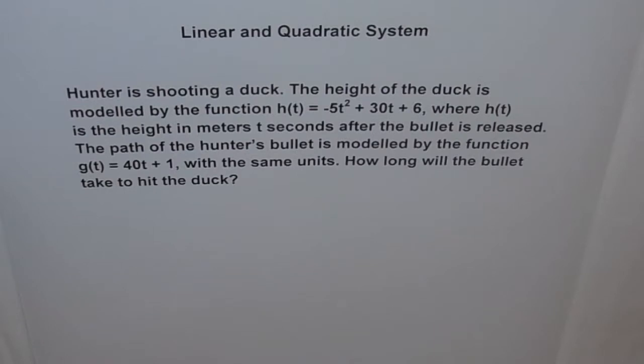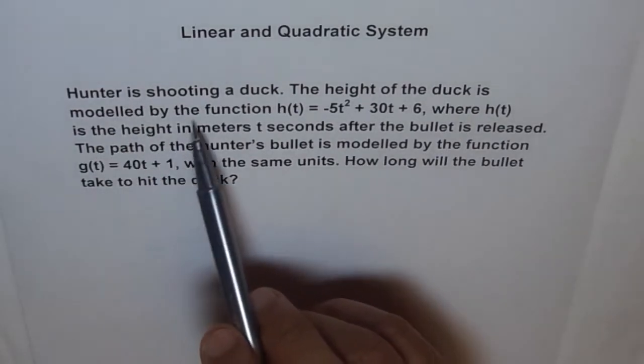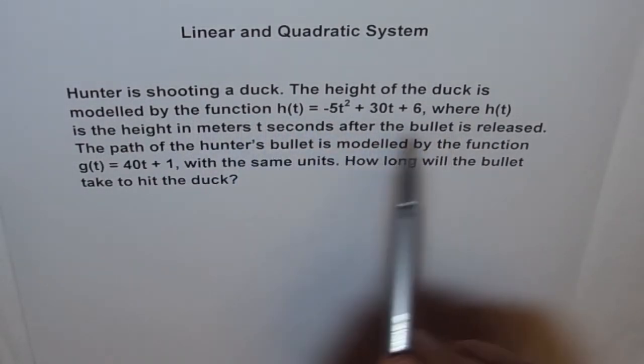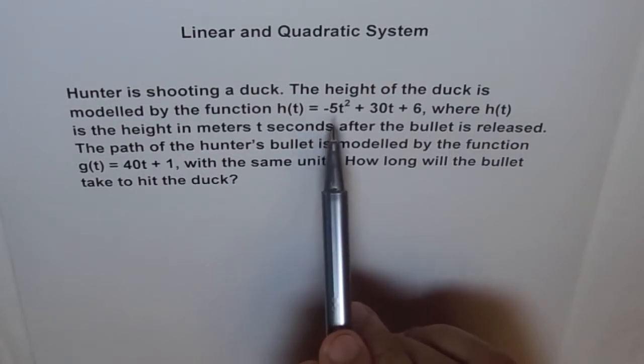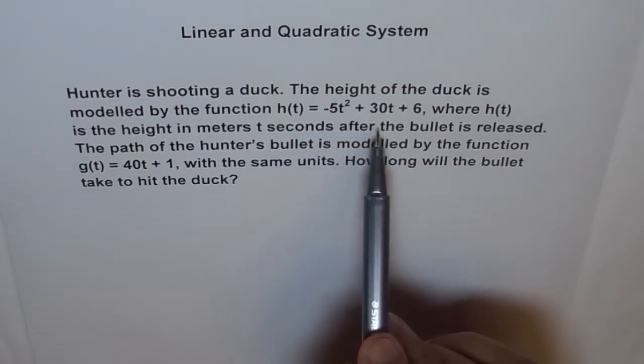Okay, now let's go through the problem and then see how to solve such a system. Hunter is shooting a duck. The height of the duck is modeled by the function h(t) = -5t² + 30t + 6,